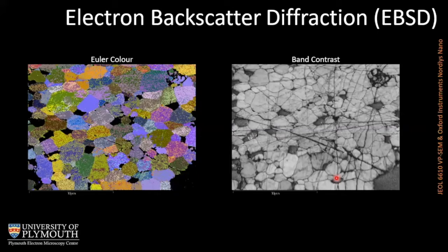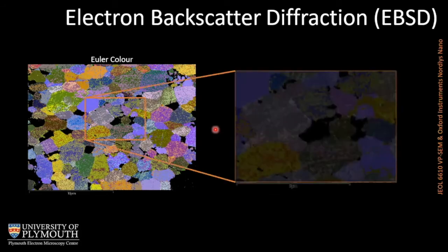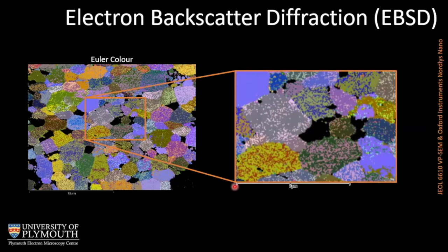On the left-hand side we have a typical electron backscatter diffraction map showing a very mottled effect — deliberately chosen to show that sometimes the data is not entirely confident. On the right-hand side is a black-and-white band contrast image: bright areas indicate good data where the EBSP patterns are really confident, and black areas indicate poor data where the bands haven't been resolved. Comparing the band contrast image to the Euler color map on the left, the black areas correspond to depressions in the sample, while the colors show many different grain orientations.